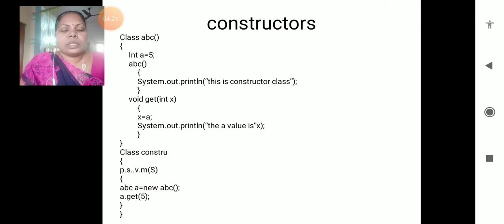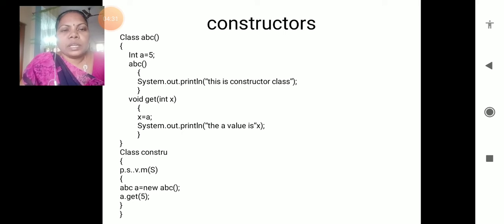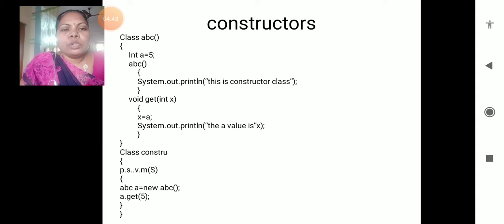Next, what is a constructor - how to define the constructor. A constructor invokes automatically when an object is created. In a constructor, the class name and method name should definitely be the same. The class name and method name should be the same name - for example, class ABC.